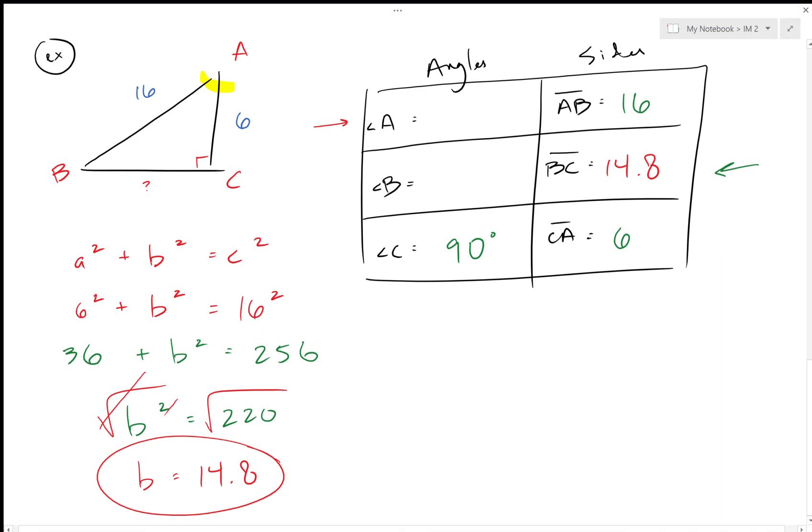And we're given two sides, we have the 16 and the 6. According to this angle A, which is now going to be our theta that we're trying to find, the 16 is the hypotenuse and the 6 is the adjacent. So just like last time, A and H go with cosine—adjacent and hypotenuse go with cosine.